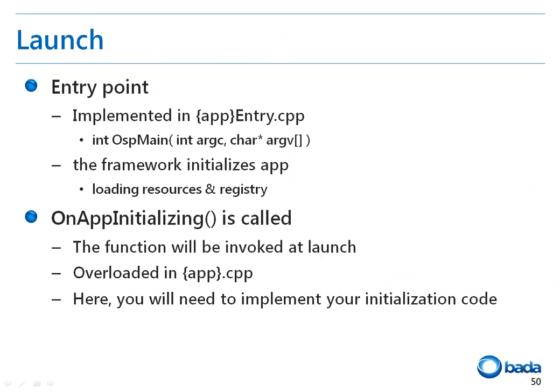Let's look into the situation when an application is launched in more detail. When an application is launched, the main entry point function OSP main in the application name Entry.cpp is called. The procedures to initialize the application class are included in this function. When the application class is initialized, the OnAppInitializing function in the application class is called. OnAppInitializing is a virtual function of the application class and is overridden in the app.cpp file. Therefore, to create an application, you have to implement the initialization procedures in this function.